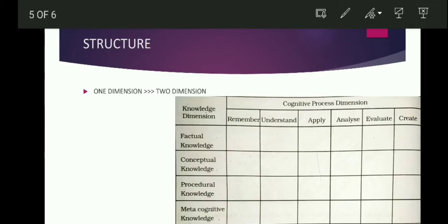Metacognitive Knowledge is about awareness of what we are doing. If I am a student, I am aware of my own thinking. Now we have two dimensions: the Cognitive Process Dimension and the Knowledge Dimension. The intersections of Knowledge Dimension and Cognitive Process Dimension give 24 cells, making the Taxonomy table.